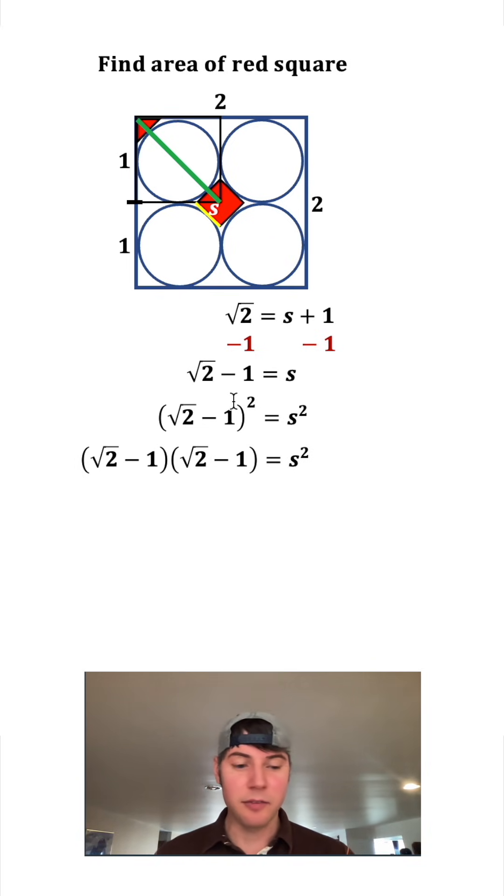s is the side of the square. To get the area of the square we would square s, so we're just going to square both sides of this equation. On the left hand side, that's the same thing as multiplying this binomial by itself, and we have to distribute. So we're going to: square root of two times square root of two gives us two, root two times negative one gives us negative root two, and negative one times root two gives us negative root two, and then negative one times negative one is positive one. And this is all still equal to s squared.